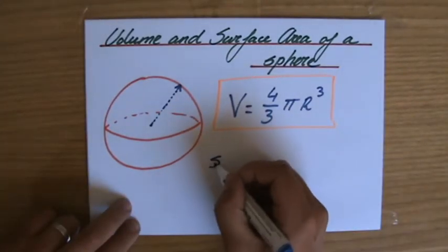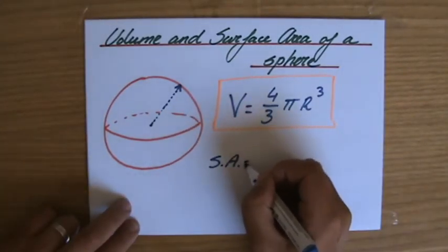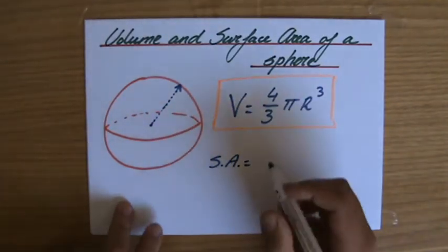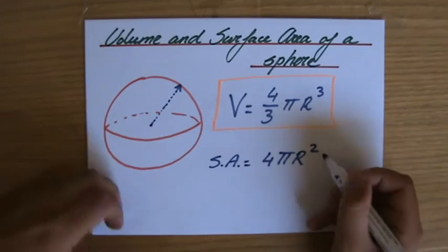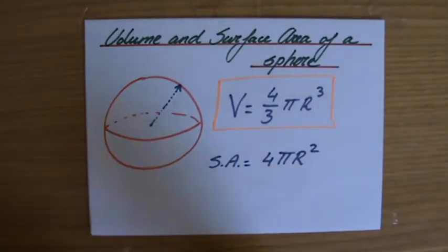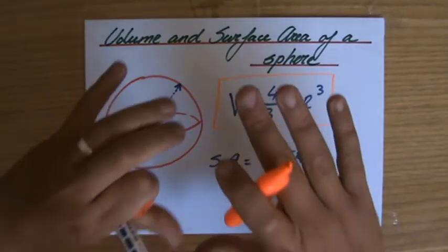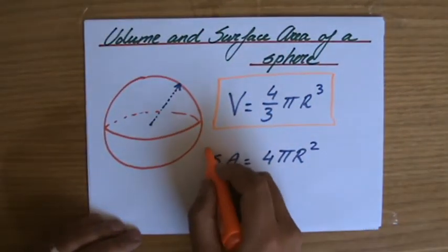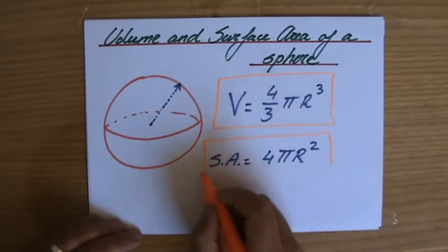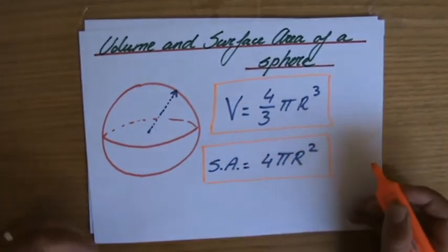Now the surface area of a sphere, and again, that is a formula they will always give to you, but that is four pi r squared. So four times pi times the radius squared. That's going to give you the surface area of that sphere. So again, not something you have to remember, still useful to know.